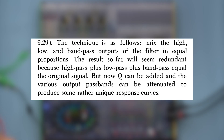He says the technique is as follows: mix the high, low and bandpass outputs of the filter in equal proportions. The results so far will seem redundant, because high pass plus low pass plus bandpass equal the original signal, but now Q can be added and the various output pass bands can be attenuated to produce some rather unique response curves.